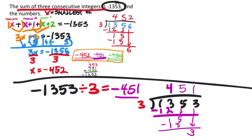Keep in mind: if this were consecutive odd or even numbers, consecutive values would be 2 apart instead of 1. So the expressions would be x, x+2, and x+4. You have to read the problem carefully — two or three times if needed — but one of these two methods will work.